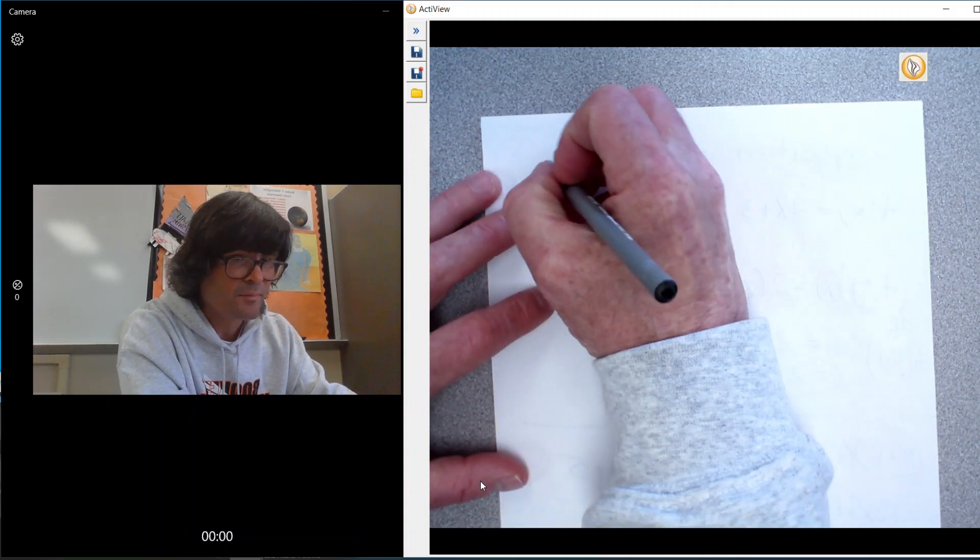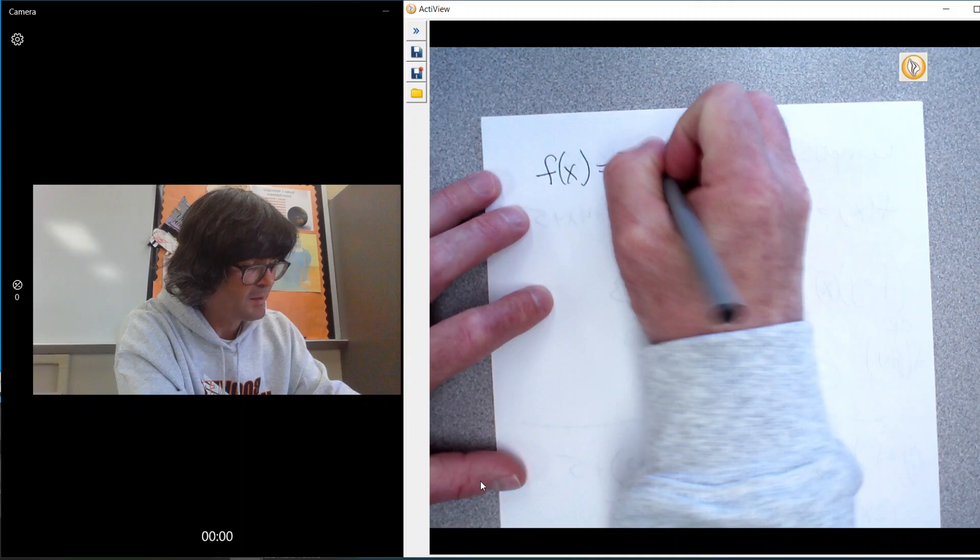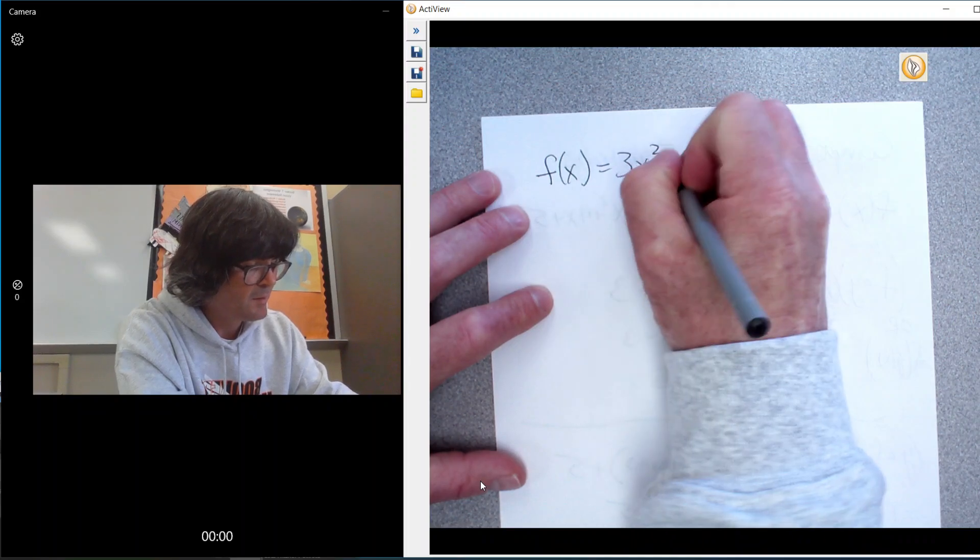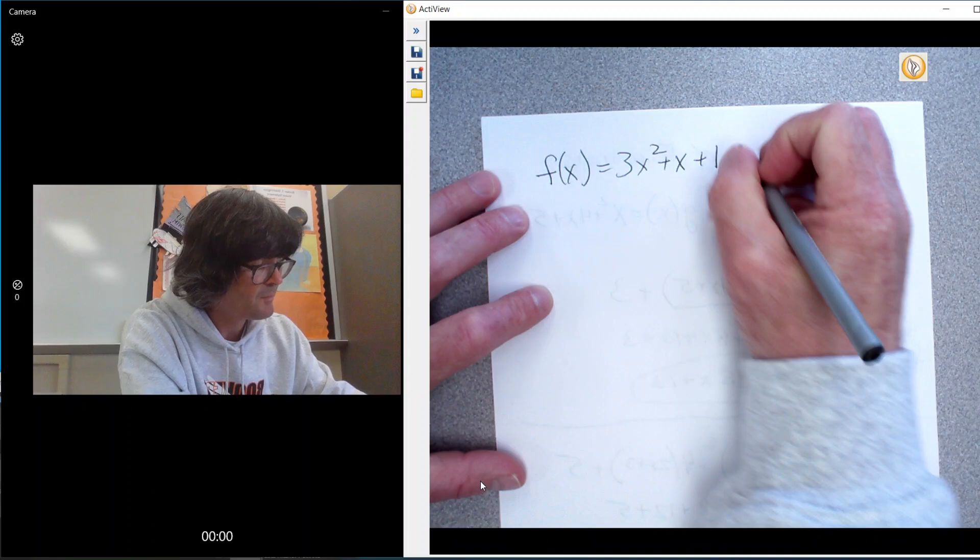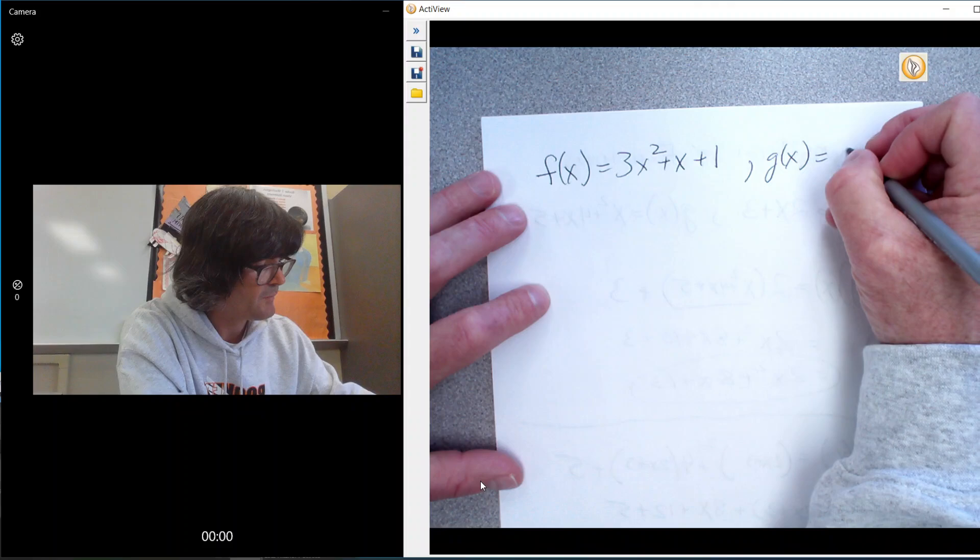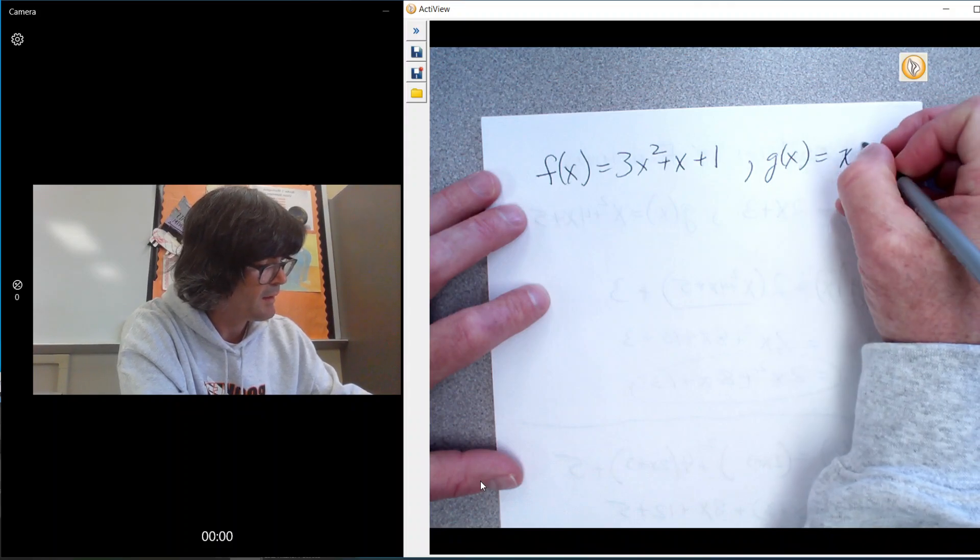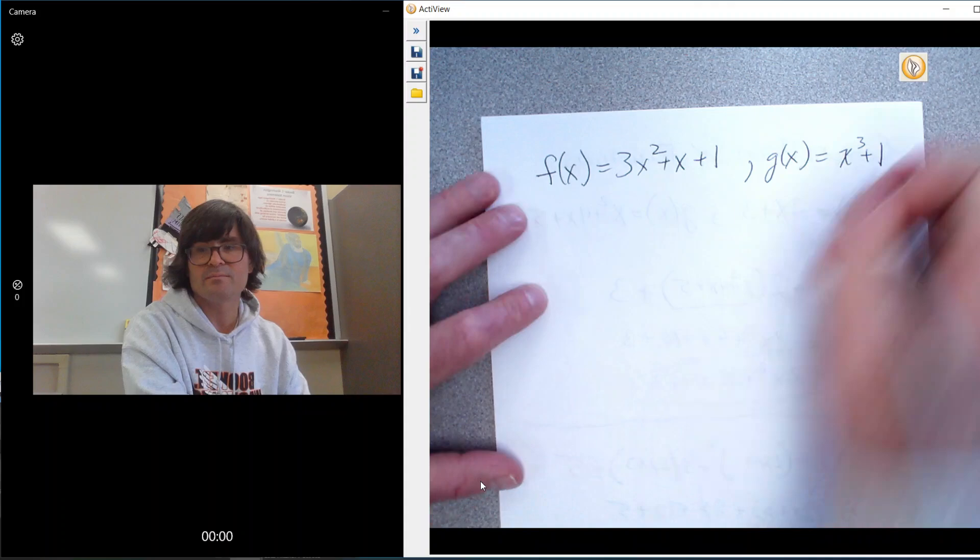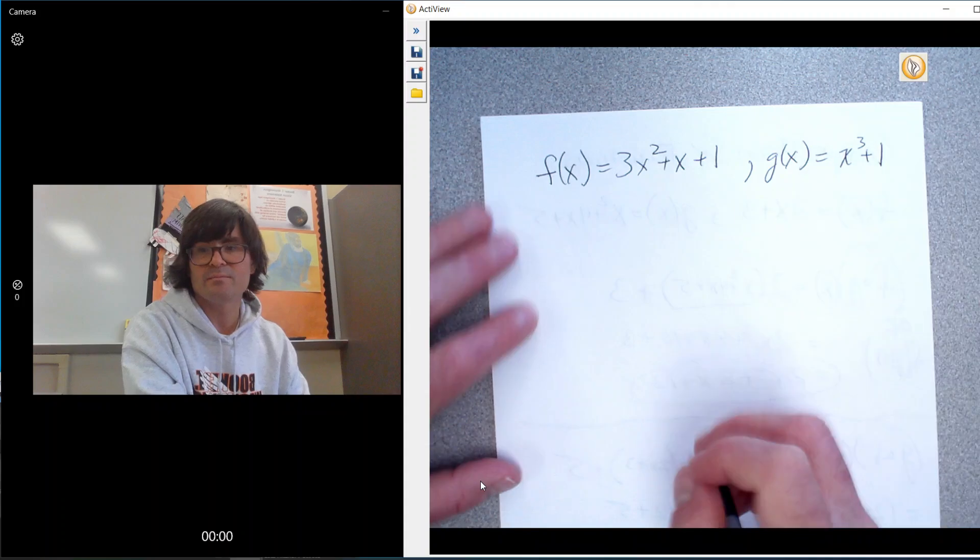We'll do f of x is 3x squared plus x plus 1. g of x will be, how about just x cubed plus 1. Fair enough.